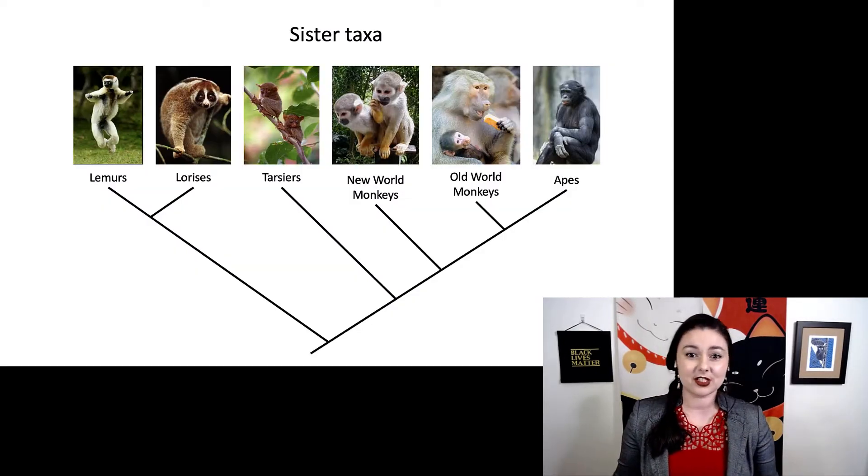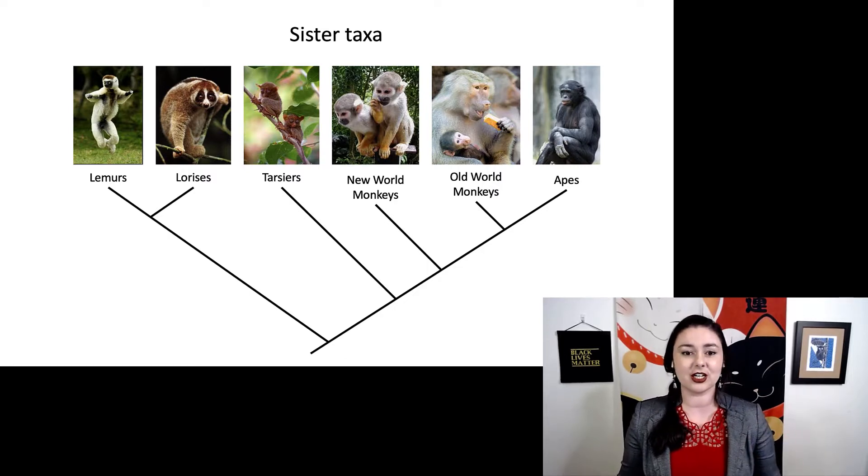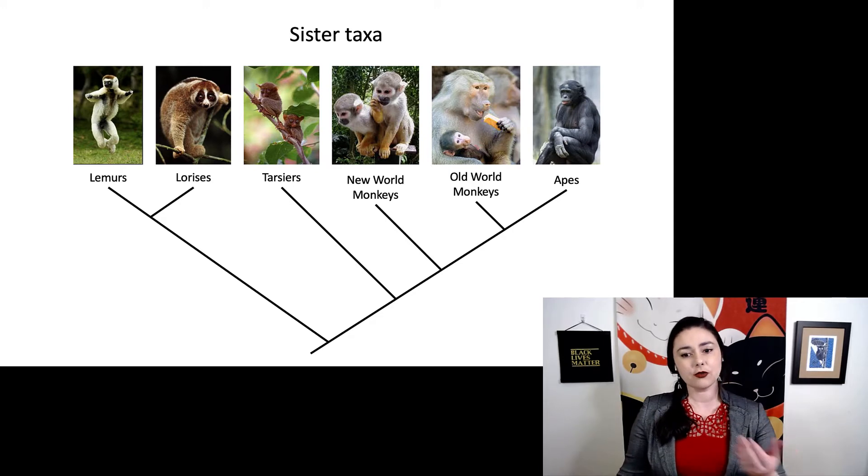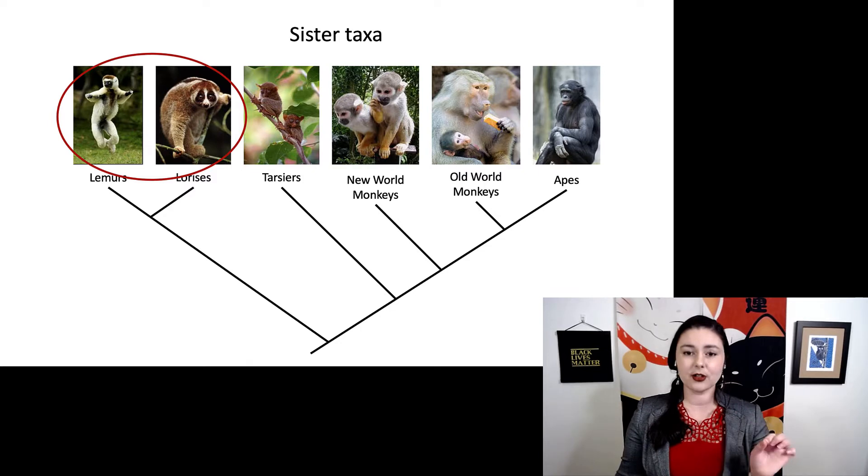But even before we talk about these terms, there's one other type of group we want to talk about. That is sister taxa. Sister taxa just means two groups or taxa in your phylogenetic tree that are more closely related to each other than they are to anyone else. So if we're using this tree as an example, lemurs and lorises are sister taxa. Because look, they are more closely related to each other than anyone else on this tree.